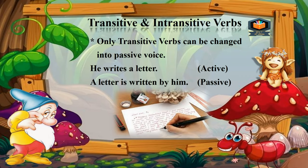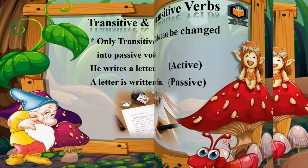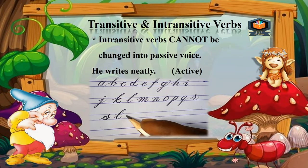Only transitive verbs can be changed into passive voice. For example: He writes a letter (active) → A letter is written by him (passive). Transitive verbs have an object, so they can be changed into passive voice. However, intransitive verbs cannot be changed into passive voice. For example: He writes neatly — this sentence has no object, so it cannot be changed into passive voice.